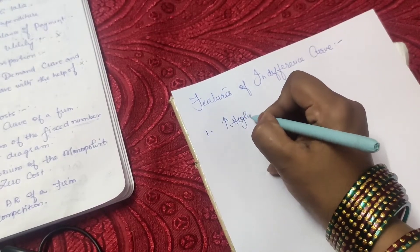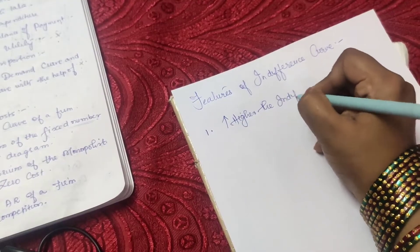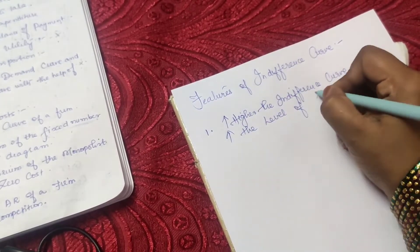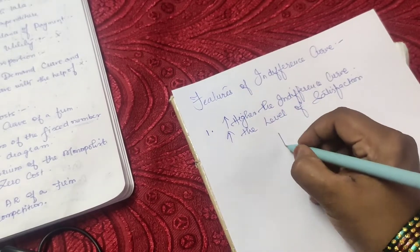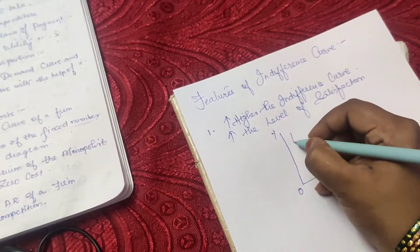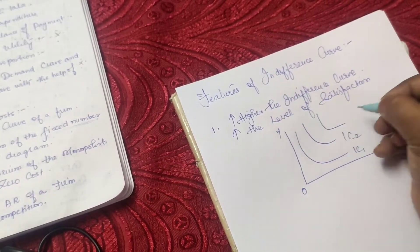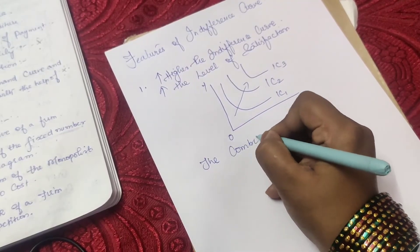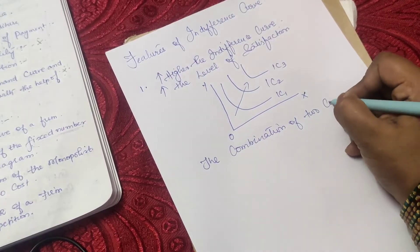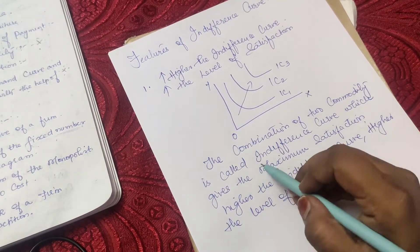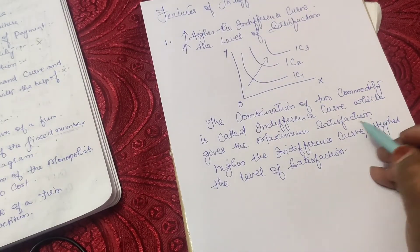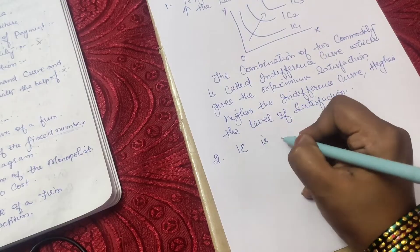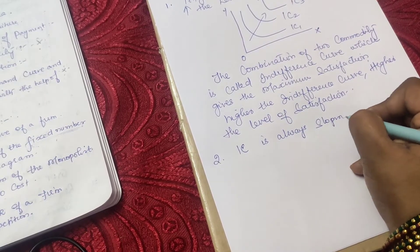The first heading is: 'Higher the indifference curve, higher the level of satisfaction.' Draw X, Y axes from the origin with IC1, IC2, IC3. The explanation is: the higher the combination of two commodities — which is called an indifference curve — gives maximum satisfaction. That is why higher the indifference curve, higher the level of satisfaction.